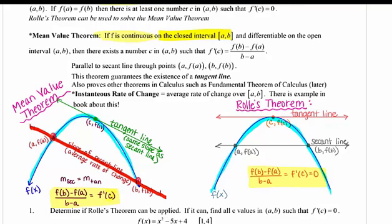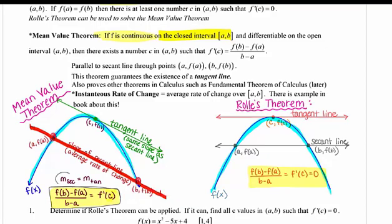How we find that slope — and this should not be a new formula — is f(b) minus f(a) all over b minus a. That is the slope formula: f(b) is y2, f(a) is y1, and b minus a is x2 minus x1. So this gives me the slope of the secant line.